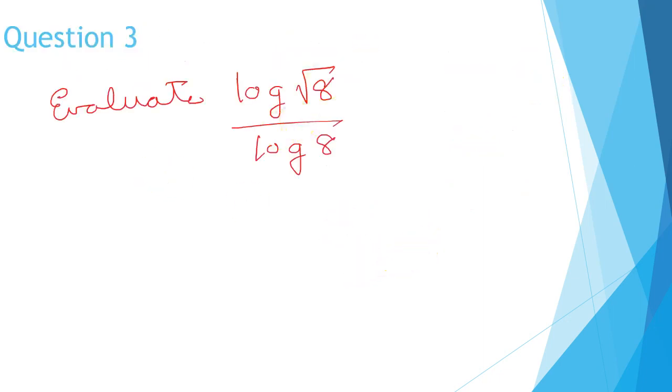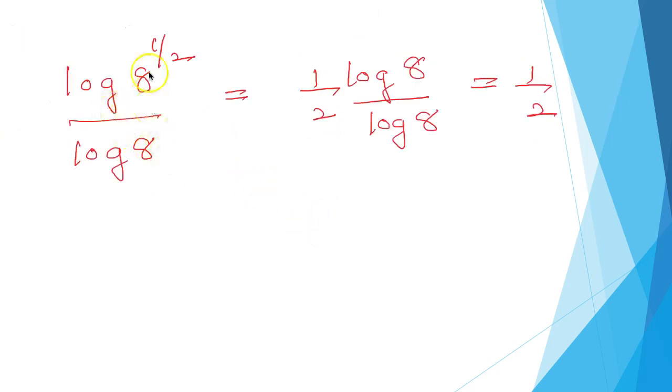Question 3: evaluate log root 8 divided by log 8. That is log 8 raised to one-half divided by log 8, which equals one-half times log 8 divided by log 8. That simplifies to one-half.